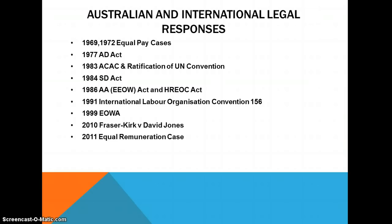Moving into Australian and international legal responses: firstly, the 1969 and 1972 equal pay cases. The Commonwealth Conciliation and Arbitration Commission (CCAC) ruled that equal pay for equal work was to be phased in by 1972. There were decades of campaigning before this, which eventually resulted in Australian women workers winning equal pay rates with men doing comparable work.